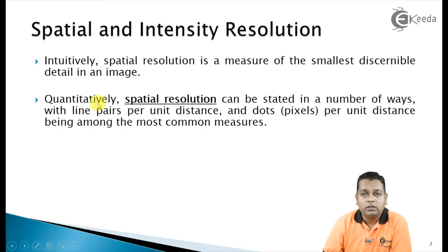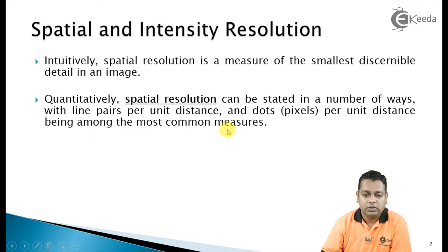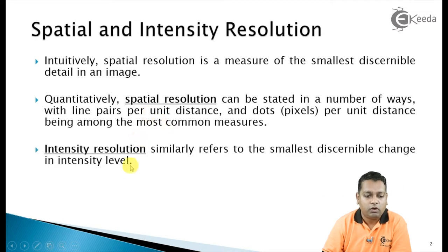Quantitatively, the spatial resolution can be stated in a number of ways — line pairs per unit distance and dots per unit distance, also known as pixels per unit distance, being among the most common measures. The term DPI, dot per inch, gives us the spatial resolution. A good value of DPI gives us good quality of the image in digital form.